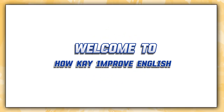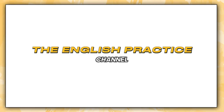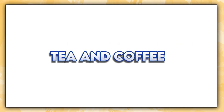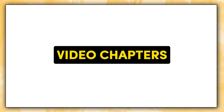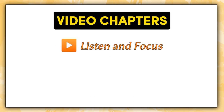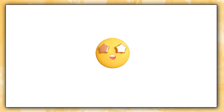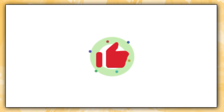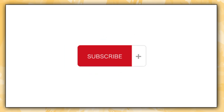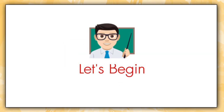Welcome to How to Improve English, the English practice channel. Today's reading paragraph is about tea and coffee. This lesson is divided into three parts. First, listen and focus. Second, listen and repeat. Third, synonyms. Stay until the end and boost your English skills today. Before starting, please like the video and subscribe to the channel. And now let's begin.